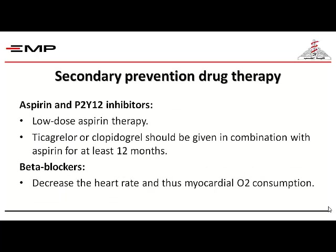How about secondary prevention drug therapy? Statins are given from the acute phase. Aspirin and P2Y12 inhibitors are extremely important. Aspirin is recommended at a low dose — the new recommendations say 100 mg or lower. Two main drugs are given as P2Y12 inhibitors: either Ticagrelor or Clopidogrel. In an acute coronary syndrome — whether unstable angina, non-ST elevation MI, or ST elevation MI — these should be given in combination with aspirin for at least 12 months, as this is the period in which recurrent events are very high due to hypercoagulability and inflammation.